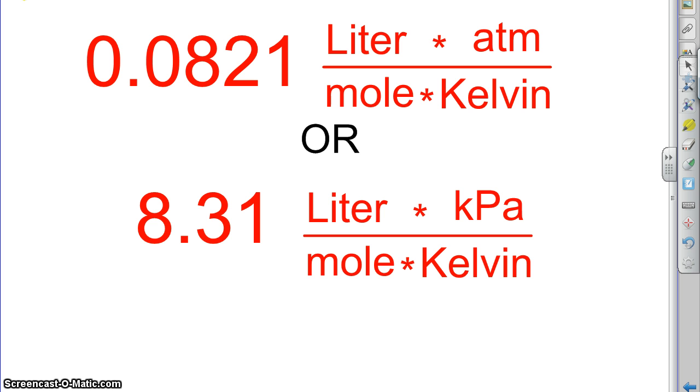Just to summarize in case you didn't have time to write those down to compare them, notice that everything's the same. Liter on top, mole on bottom, Kelvin on bottom. The only difference is atmosphere to kilopascal. And you'll notice that this number is actually 101.325 times smaller than this number as atmospheres would be to kilopascals. So, if you do a unit conversion on this to atmospheres, you'll get that number out. So, memorize those numbers in those units.